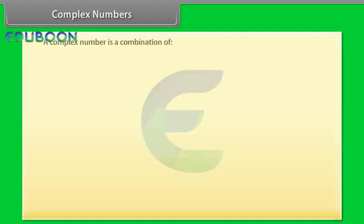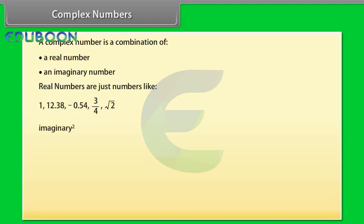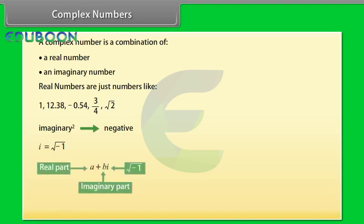Complex numbers. A complex number is a combination of a real number and an imaginary number. Real numbers are just numbers like 1, 12.38, minus 0.54, 3/4, square root of 2. Imaginary numbers are special because when squared, they give a negative result. The unit imaginary number is i (iota), which is the square root of minus 1. A plus B iota is a complex number — a combination of a real number and an imaginary number. Examples are: 1 plus iota, 39 plus 3 iota, minus 2 plus pi iota, square root 2 plus iota by 2.